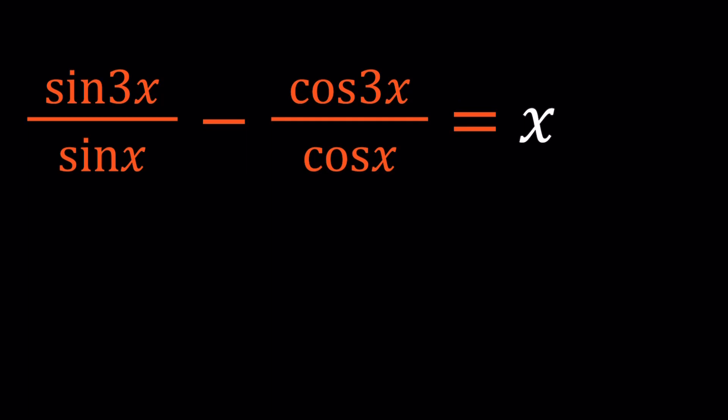So in other words, as a general rule, I can safely say that whenever you see sine a over sine b minus cosine a over cosine b, what you should do is to make a common denominator. Because you're going to get something nice. Let's find out.